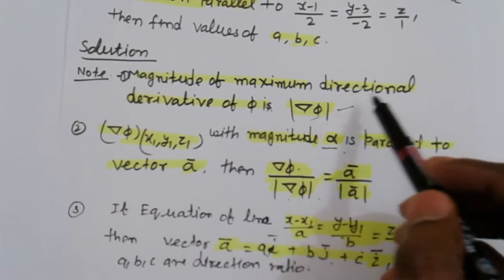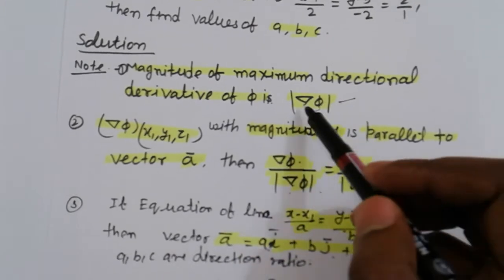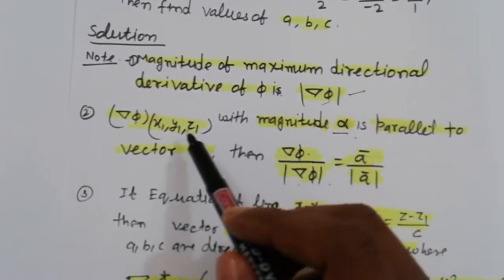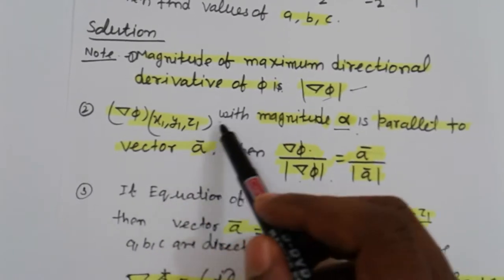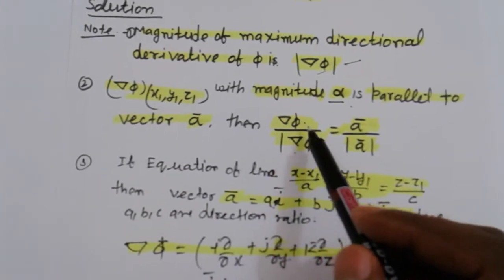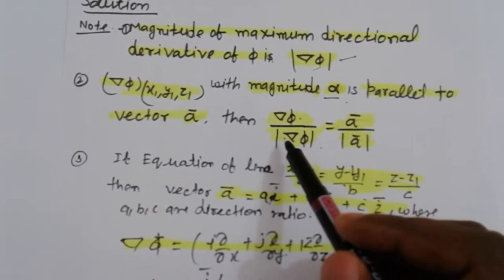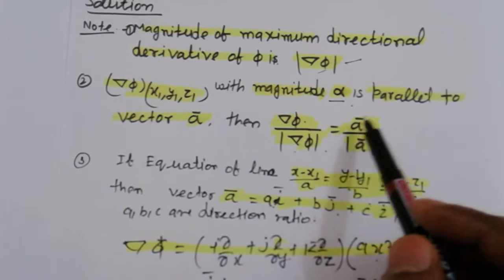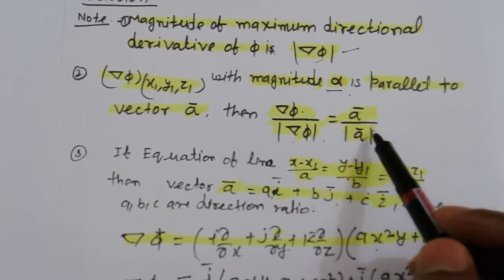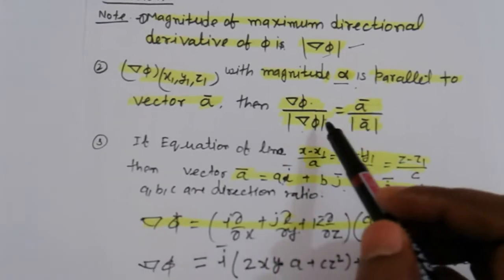Magnitude of maximum directional derivative of phi is denoted by magnitude of nabla phi at point (1,1,1). With magnitude alpha parallel to vector a, then nabla phi divided by magnitude of nabla phi equal to vector a divided by magnitude of vector a at given point.